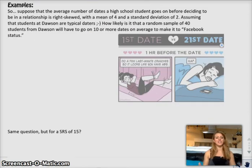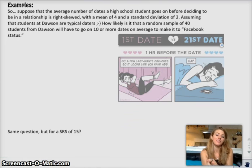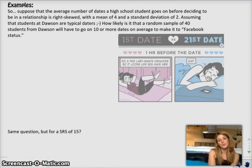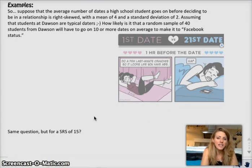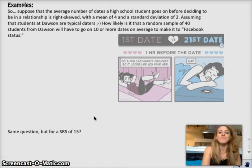You guys ready to do an example? Cool. Super pumped that you're in too. Suppose the average number of dates a high school student goes on before deciding to be in a relationship, to have an official title, is right skewed with a mean of four and standard deviation of two dates. Assuming that the students at Dawson are typical daters, how likely is it that a random sample of 40 students from Dawson will have to go on 10 or more dates on average to make it to Facebook status? I think our probability is going to be pretty tiny, but that's okay.